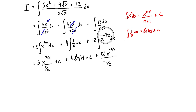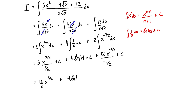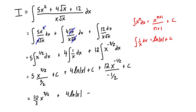These arbitrary constants from each term are all unknown constants, and three unknown numbers added together is just another unknown number, so we lump them all into one single C. Dividing by fractions is the same as multiplying by the inverse: 5 times 2/3 gives us 10/3 times x^(3/2), plus 4 ln|x|, minus 24x^(-1/2), plus one single arbitrary constant C.